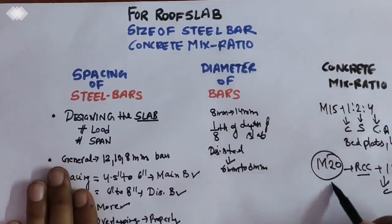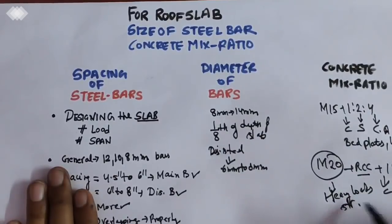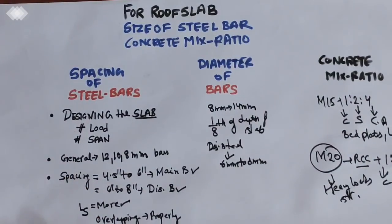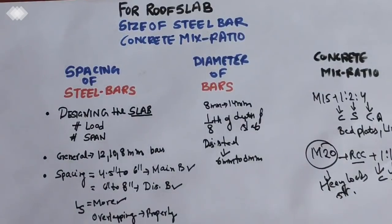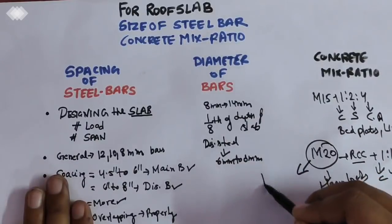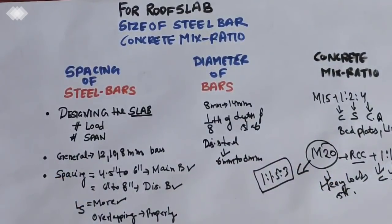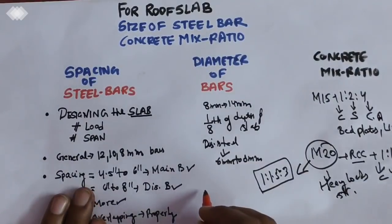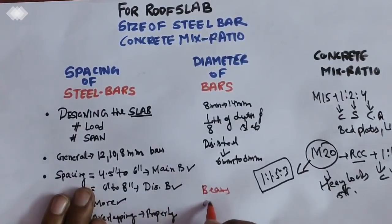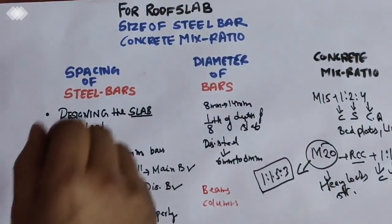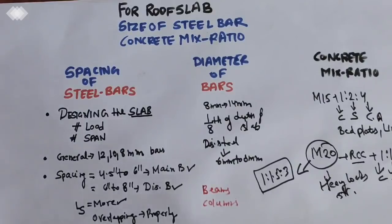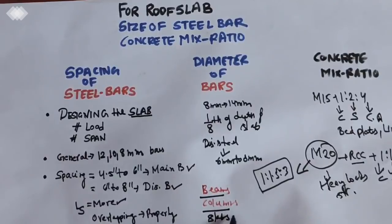The M20 ratio is 1:1.5:3 — cement, sand, and coarse aggregate. This is used for heavy load structures. The structures that use M20 include beams, columns, and slabs.